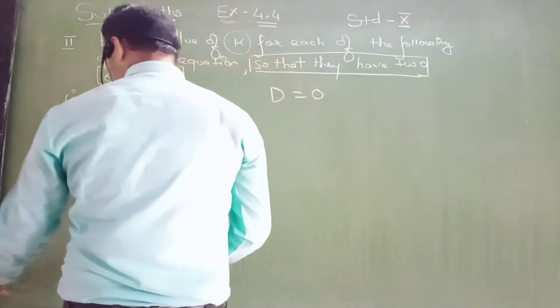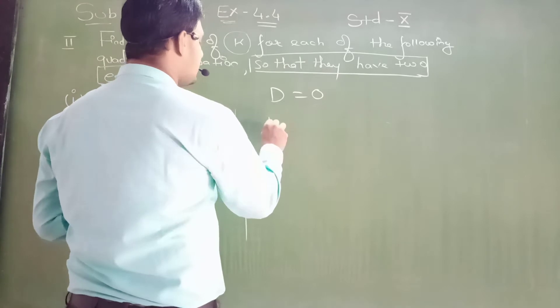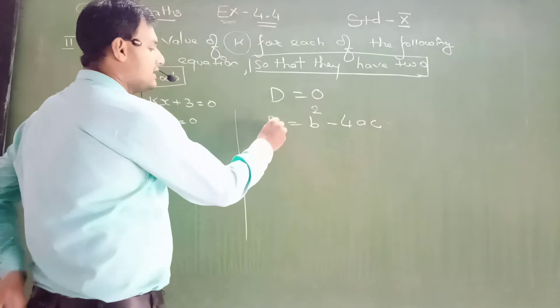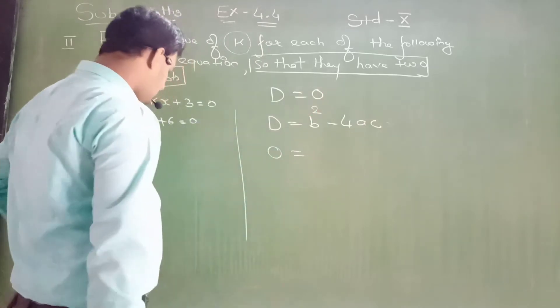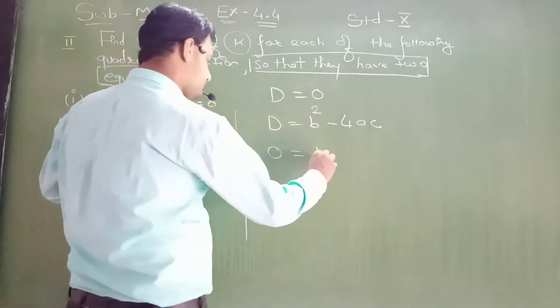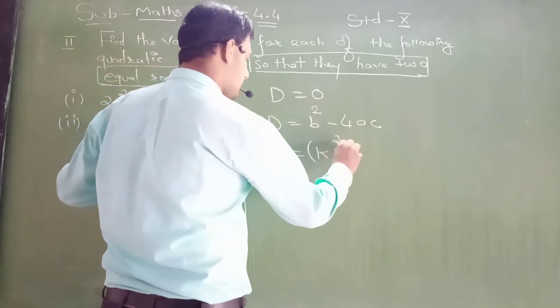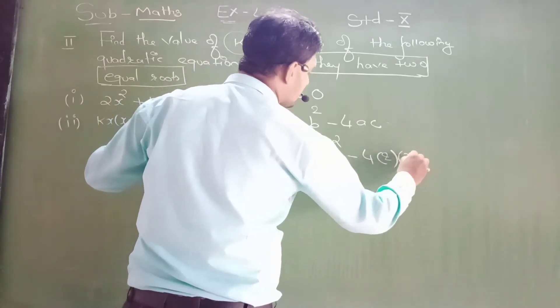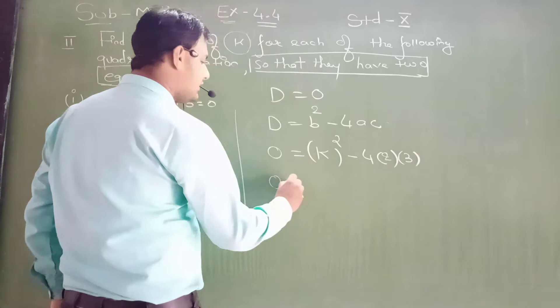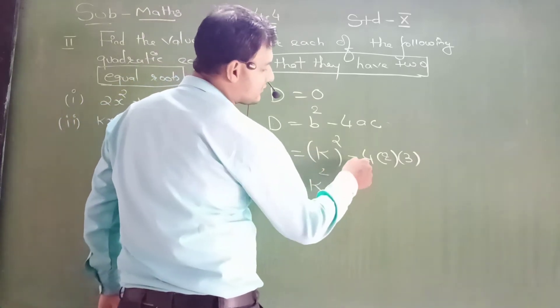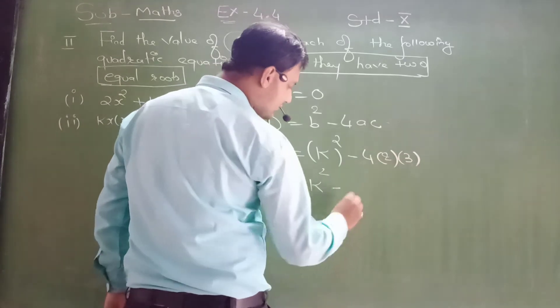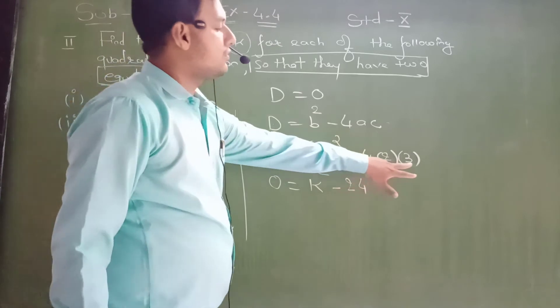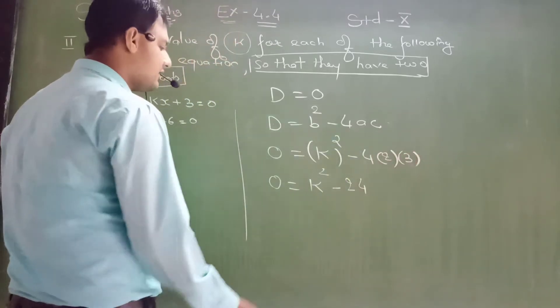Now please see here, D equals to b² - 4ac. D is what, dear students? 0. What was our b? k. Minus 4. What was our a? 2. What was our c? 3. 0 equals to k² minus 4 × 3 is 12, and 12 × 2 is 24.